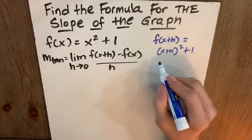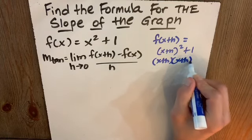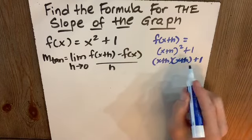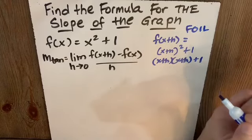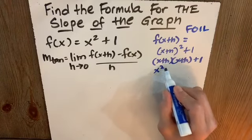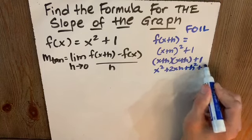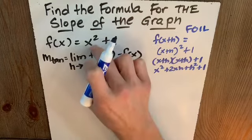And if this is x plus h, I have to do x plus h times x plus h. Look at my good algebra skills. Please don't say that's x squared plus h squared, because we have middle terms of OI. I have to use FOIL there. Good algebra skills. x squared plus 2xh plus h squared plus 1. That's my f of x plus h.